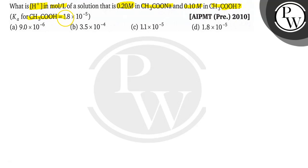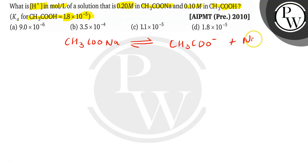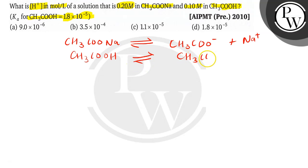Ka for CH₃COOH is equal to 1.8 × 10⁻⁵. If we talk about the ionization reactions taking place: CH₃COONa dissociates into CH₃COO⁻ plus Na⁺, and CH₃COOH dissociates into CH₃COO⁻ plus H⁺ ion.